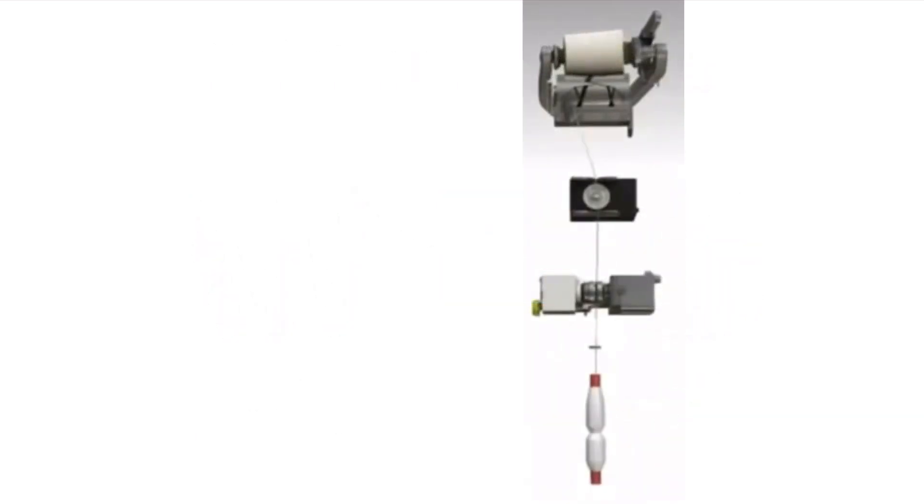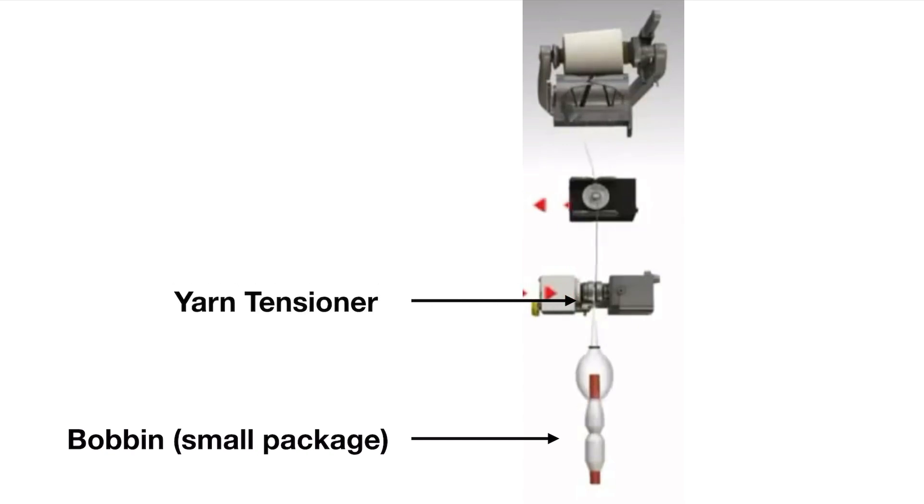Important parts of a winding machine are: bobbin or small package, yarn tensioner which gives the required tension to yarn for winding, and auto sensor which detects the yarn tension and brings about changes in yarn tensioner so that a constant yarn tension is maintained throughout the winding process.